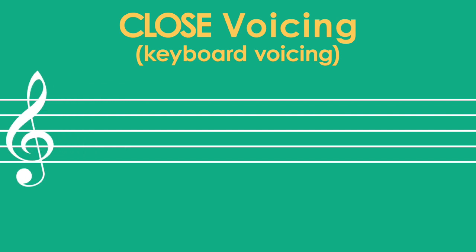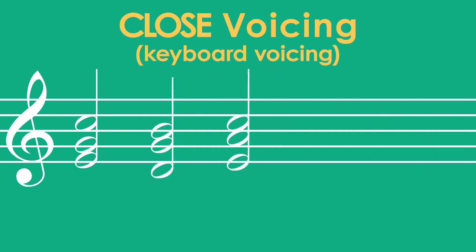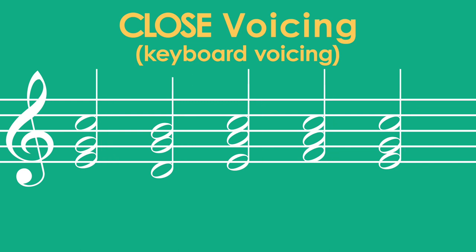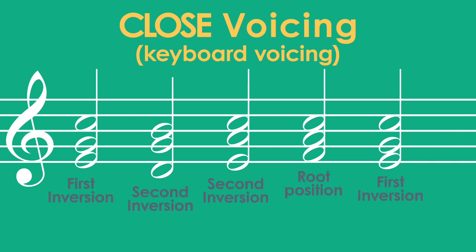So, in this example, we have this chord progression. If we look at each of the chords, they're all within one octave of each chord's lowest note, so we know that these are all closed chords. As you can see, a closed chord does not have to be in root position — it can be in first or second inversion and still be a closed chord. It's a closed chord as long as all the notes stay within that one octave range.